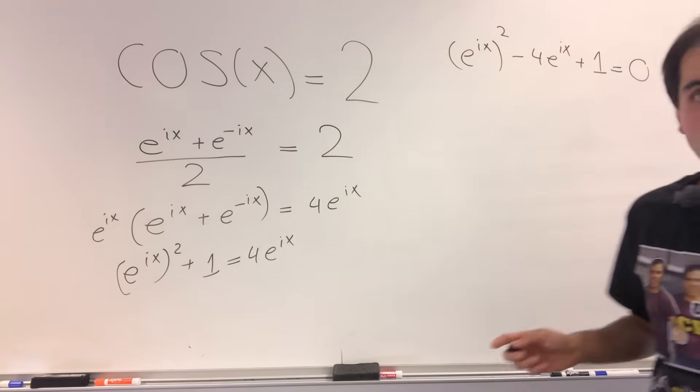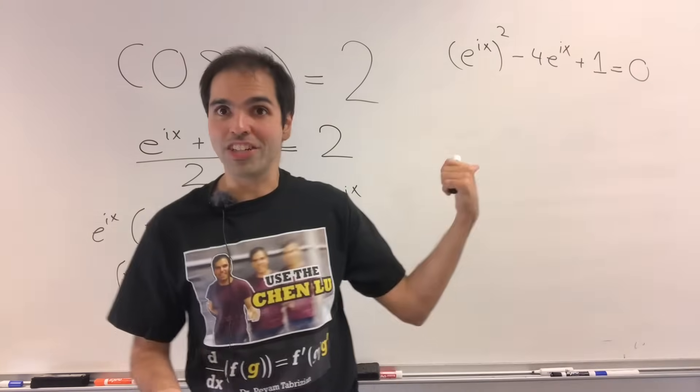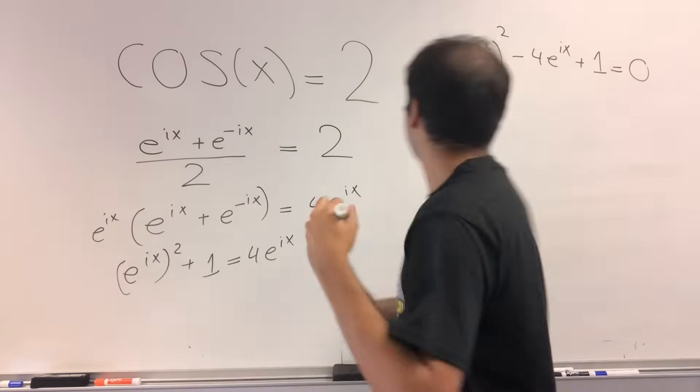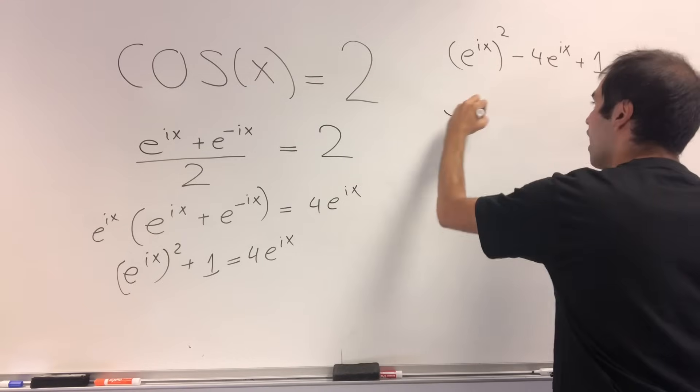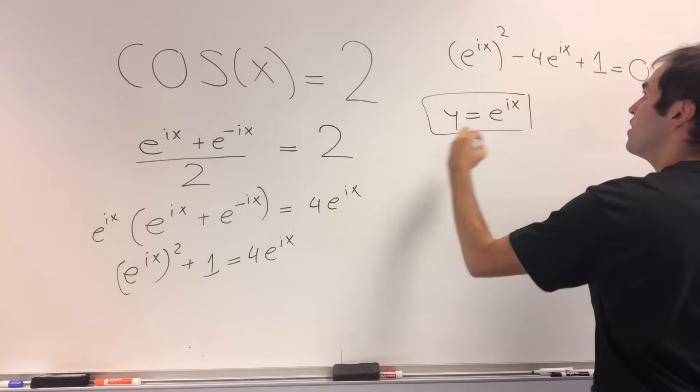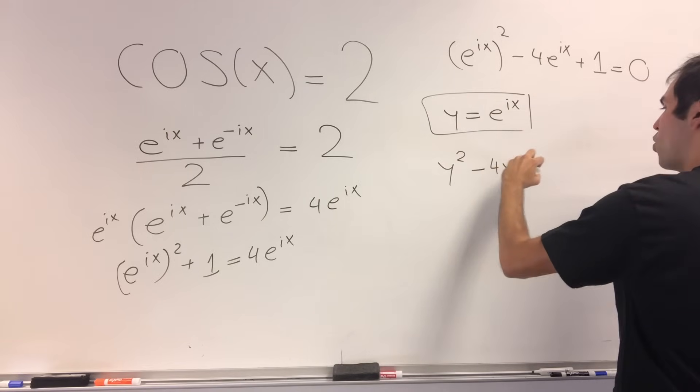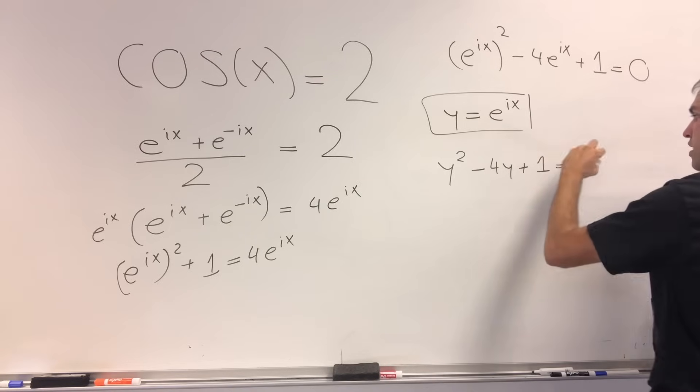And as complicated as this looks, it's actually a quadratic equation. So let's solve this, because if you let y be e to the ix, then what this becomes is just y squared minus 4y plus 1 equals 0.